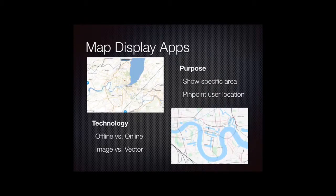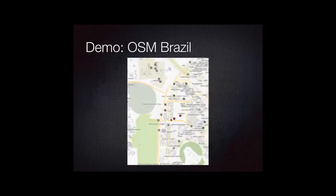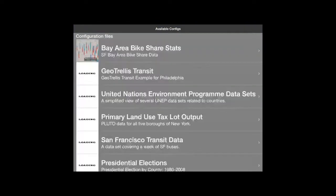Let's take a look at another category: the map display app. Map display is something that's probably very familiar — a lot of us use maps on mobile devices, either Apple's maps, Google's maps, or somebody else's, and there's a huge variety out there, some of which use this toolkit. This example is using OpenStreetMap data from Brazil — specifically a vector map. Vectors are much more flexible than images.